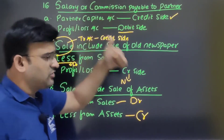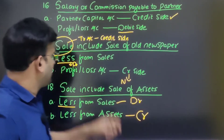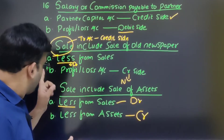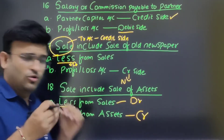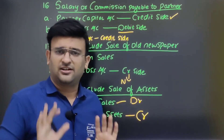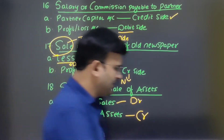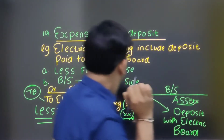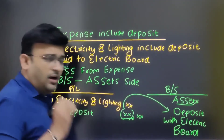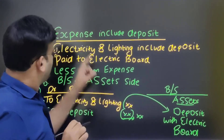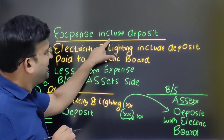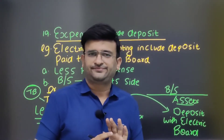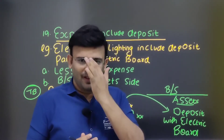We have made three adjustments: salary or commission payable to partner; sale includes sale of old newspaper; sale includes sale of asset. Moving ahead, our next adjustment is expense includes deposit.